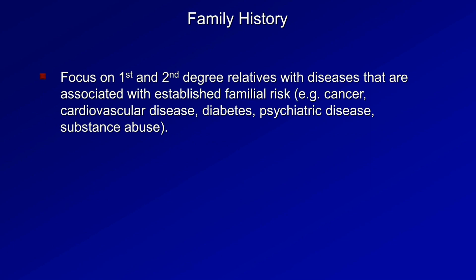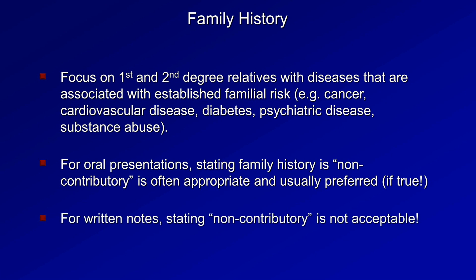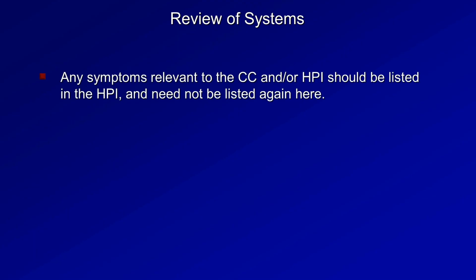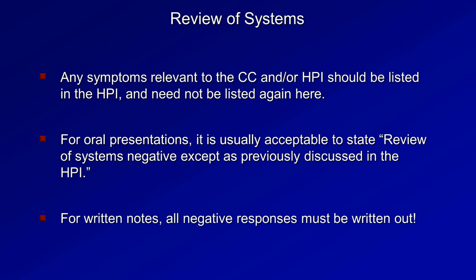For family history, focus on first and second degree relatives with diseases associated with established familial risk. The big five are cancer, cardiovascular disease, diabetes, psychiatric disease, and substance abuse. For oral presentations, stating that the family history is non-contributory is often appropriate if indeed true; however, for written notes, stating non-contributory is generally not acceptable. The final part of the history is the review of systems. Any symptoms relevant to the chief complaint or HPI should be listed in the HPI and not repeated here. For oral presentations, it's acceptable to state 'review of systems negative except as previously discussed in the HPI,' but for written notes, all negative responses should be written out.